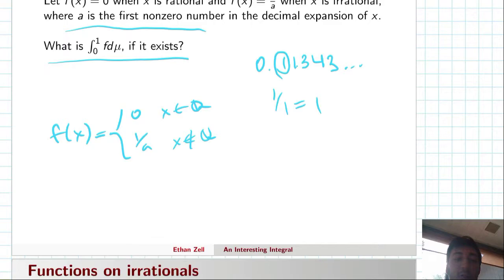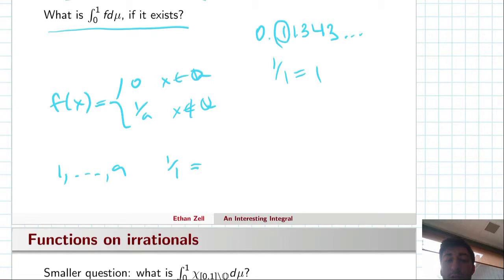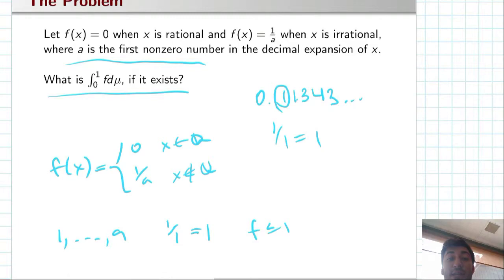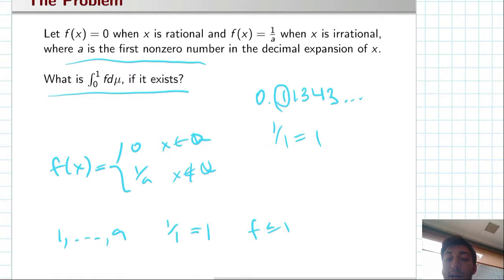Deciding whether or not this exists is not too bad because one over a, we know that a can be any number one to nine because it has to be non-zero. That means that at any point, the largest value of f is one over one, which is one. So f is always bounded above by one, and f itself is a non-negative function.